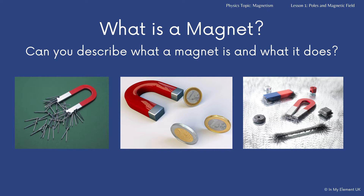So firstly, what is a magnet? You've got three images there, all containing magnets. Have a look at those images and think about how you could use those to describe what a magnet is. What key words would you use? What we're looking for are words like attract, repel, magnetic materials — if you could name some of those, that would be great. And if you could name those magnets.